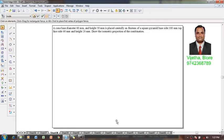A cone base diameter 60 mm and height 50 mm is placed centrally on a frustum of a square pyramid. Base side 100 mm and top face side 60 mm and height 20 mm. Draw the isometric projection of the combination.